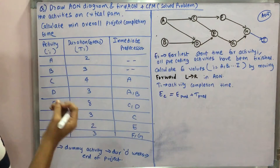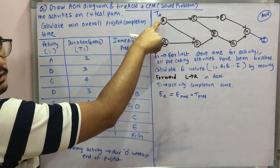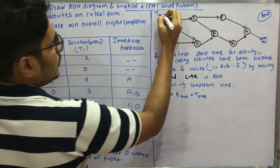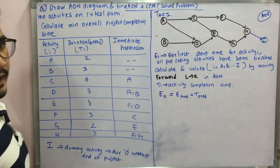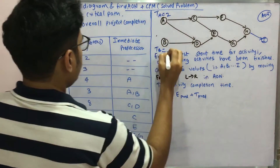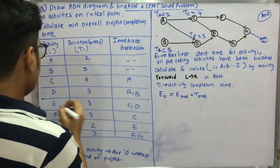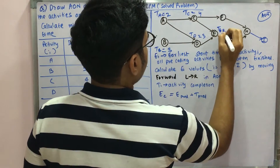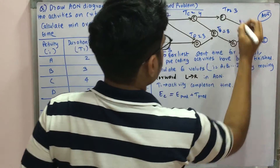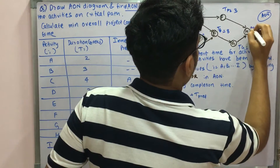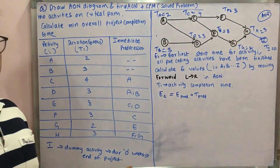Now assign the duration TI to each activity. TA is 2, TB is 3, TC is 4, TD is 3, TE is 8, TF is 3, TG is 2, TH is 3, and TI is 0, since we assigned the dummy activity 0 weeks.